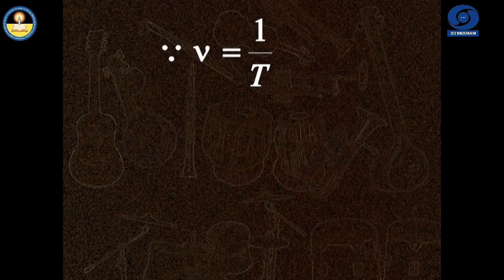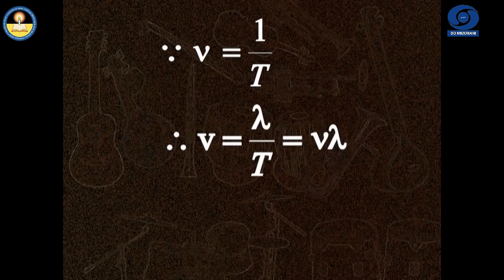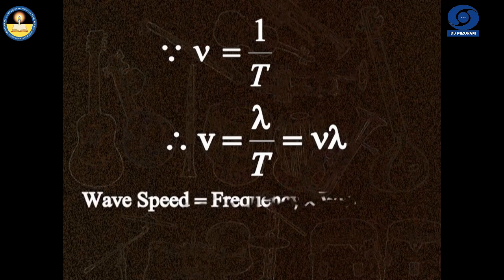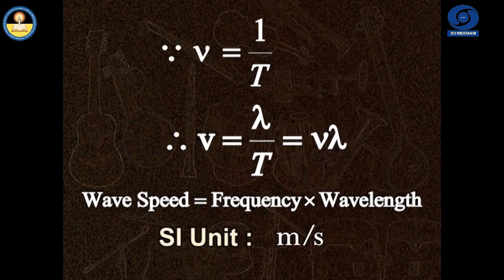As the frequency of a wave is reciprocal of the time period of the wave, the relation for wave speed becomes equal to the product of frequency and wavelength of the wave. SI unit of wave speed is the same as of speed, i.e. meter per second.